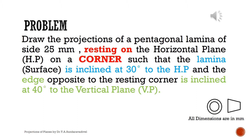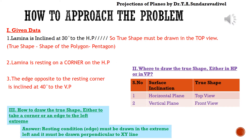We have to segregate and note these three things carefully from any projections of planes problem. It may be given directly, or in some problems it may not be given directly — we have to imagine and find out these three conditions. We are going to follow first angle projection scheme: the vertical plane comes above the XY line and the horizontal plane comes below the XY line.